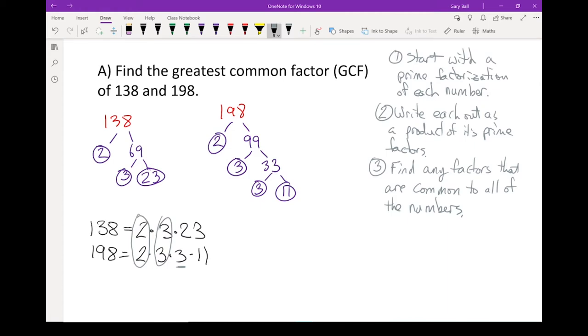Next step, I'm going to write out those common factors. So my GCF, my greatest common factor, equals 2 times 3, once for each factor we've got. So in other words, my GCF, 2 times 3, is 6. The greatest common factor of 138 and 198 is 6. So that is the largest number that will divide into both of them.